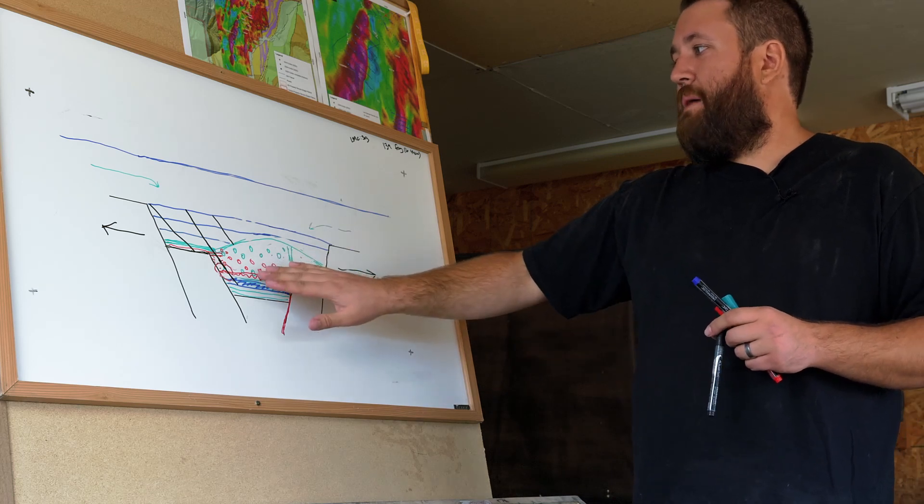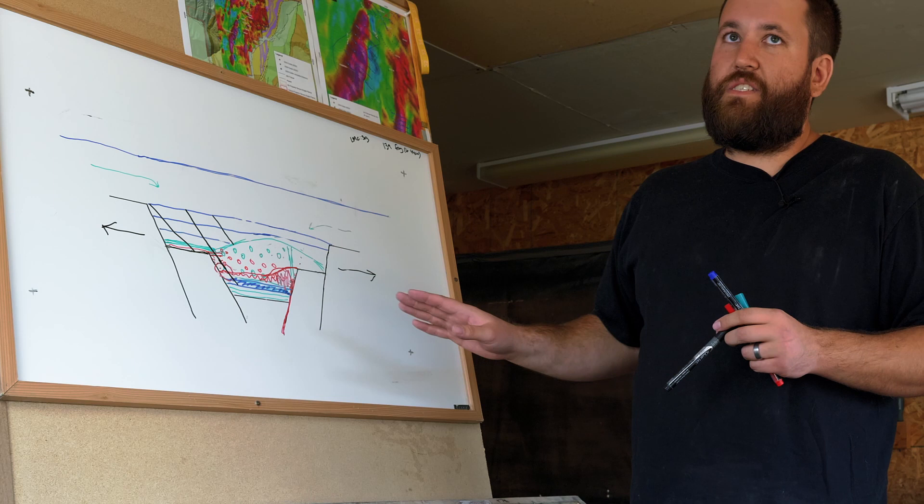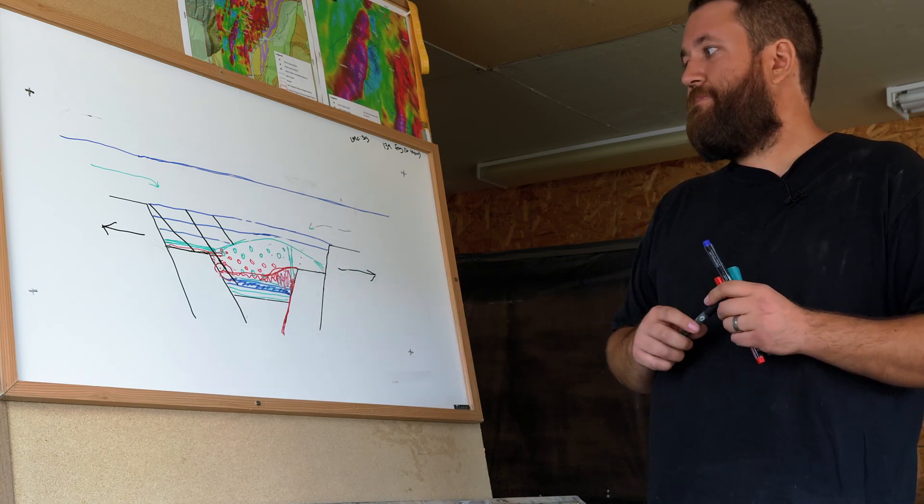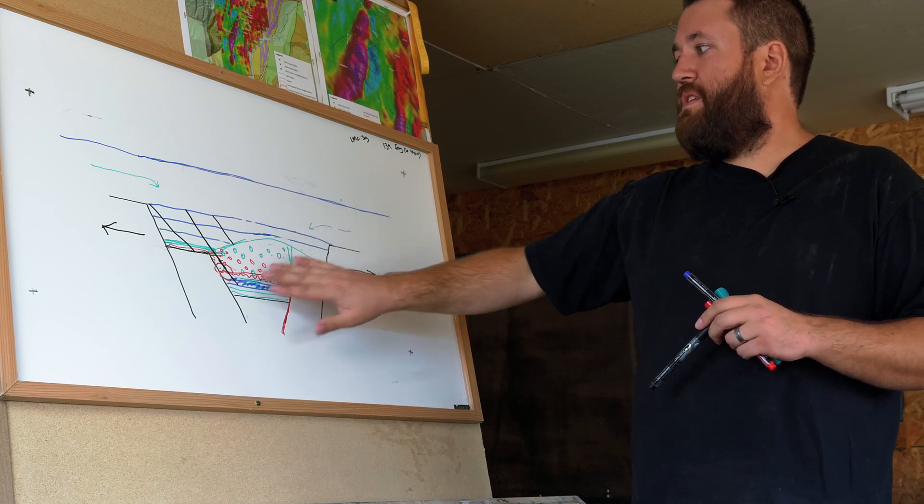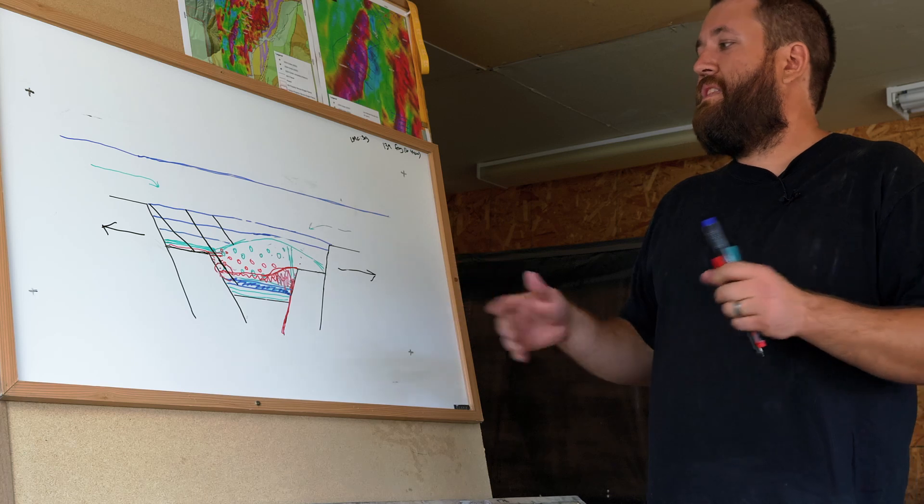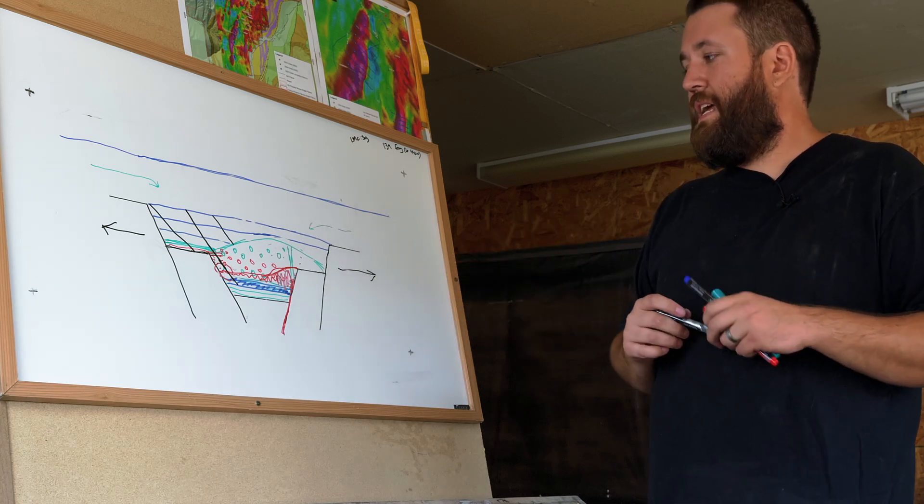This has only really been seen a couple times through the basin and one really good example is proximal to the North Star deposit near the Sullivan mine in Kimberley. So this is a really good indication that we may be close to a larger lead-zinc body that has been remobilized and moved slightly down in stratigraphy.